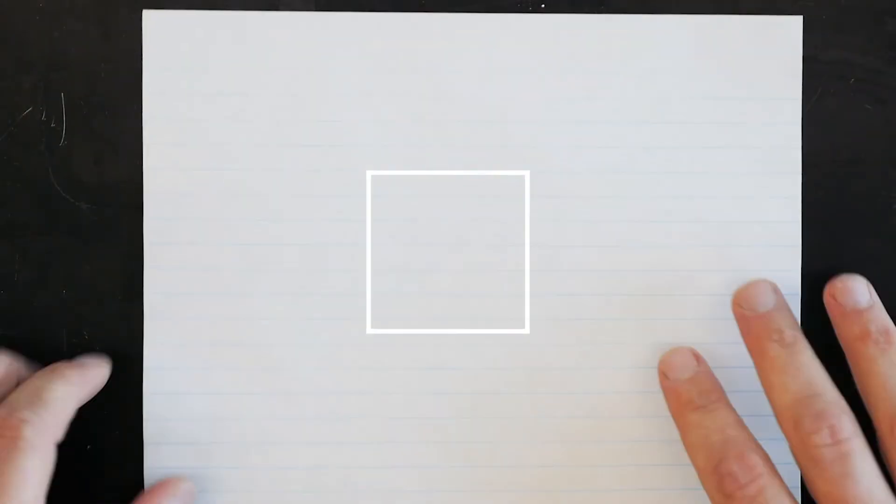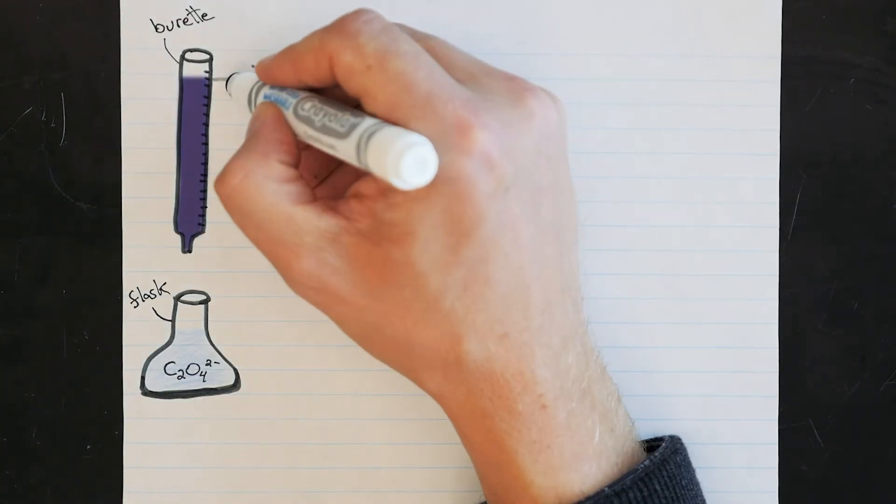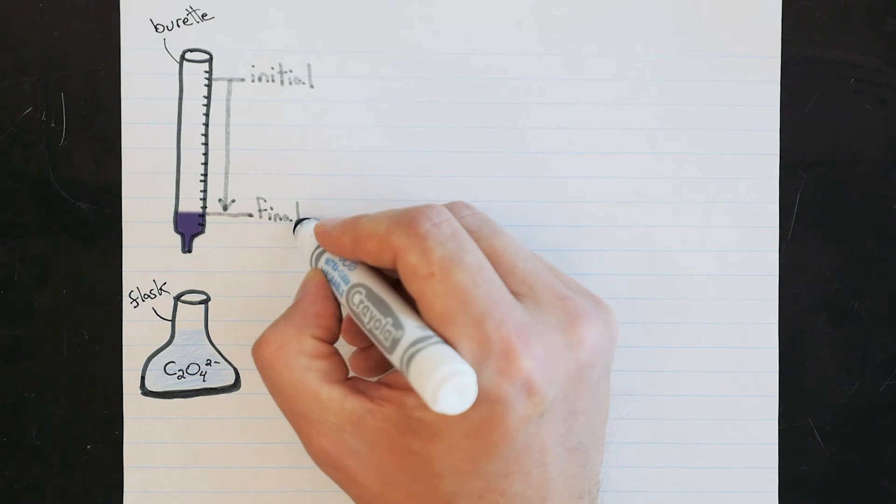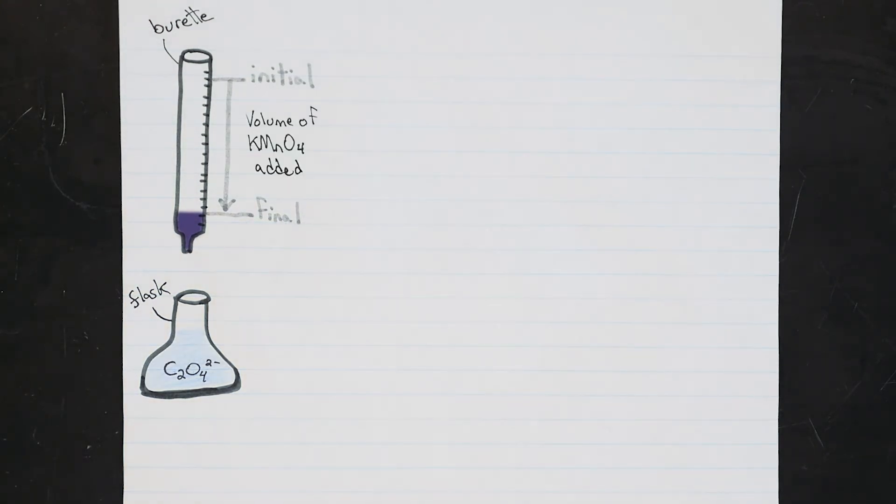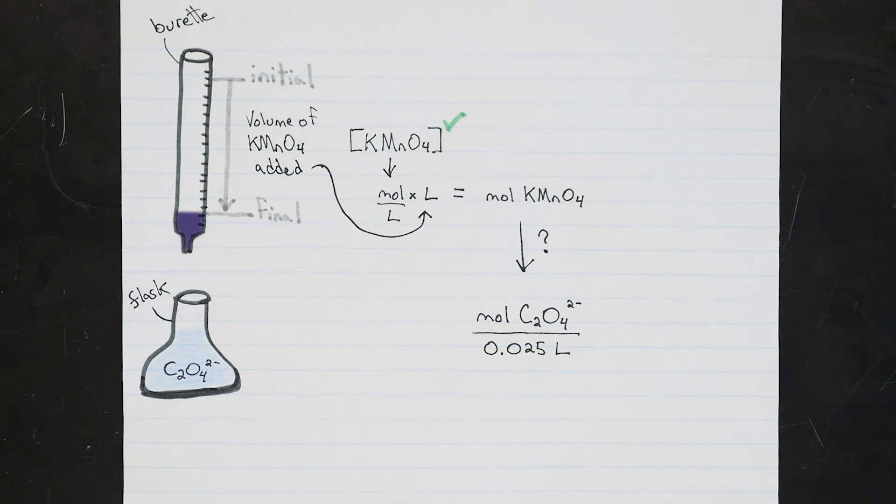Alright, so now that your titration is finished, you'll know what your initial and final volumes were from the burette. The difference between these is, of course, the volume of potassium permanganate solution you added. And remember, that's the solution that we do know the concentration of. So we take that concentration, in moles per liter, and multiply it by the number of liters we used to calculate the total number of moles of potassium permanganate. Now we just use the stoichiometry of the reaction to figure out how many moles of the oxalate we must have had if the permanganate reacted to completion. Knowing how many moles of oxalate we had in that 25 mil sample we started with allows us to work out what the concentration of that sample was.